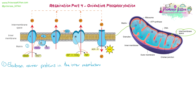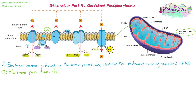The electron carrier proteins are found in the inner membrane and they oxidize the reduced coenzymes NAD and FAD when they arrive. Remember, oxidation is loss — so they are giving up their protons and electrons, thereby reducing those carrier proteins in the membrane. The electrons then pass down the electron transport chain, moving from protein to protein through a series of redox reactions. As they leave one protein it is oxidized, and as they join the next one that protein is reduced.